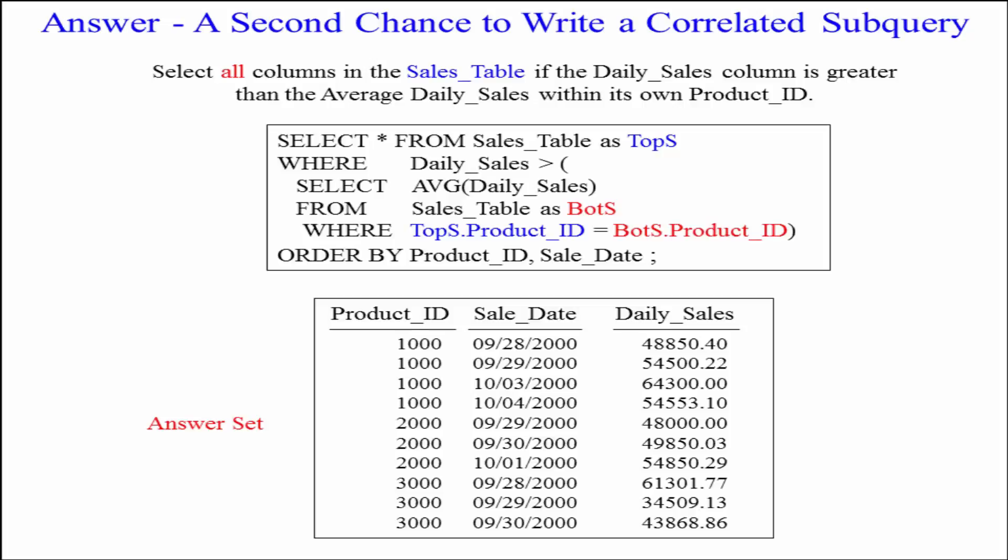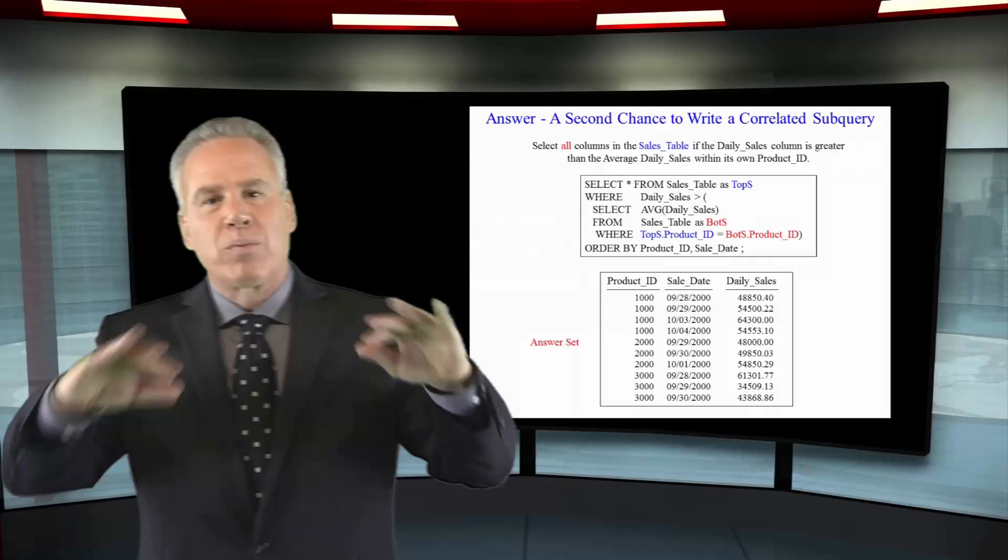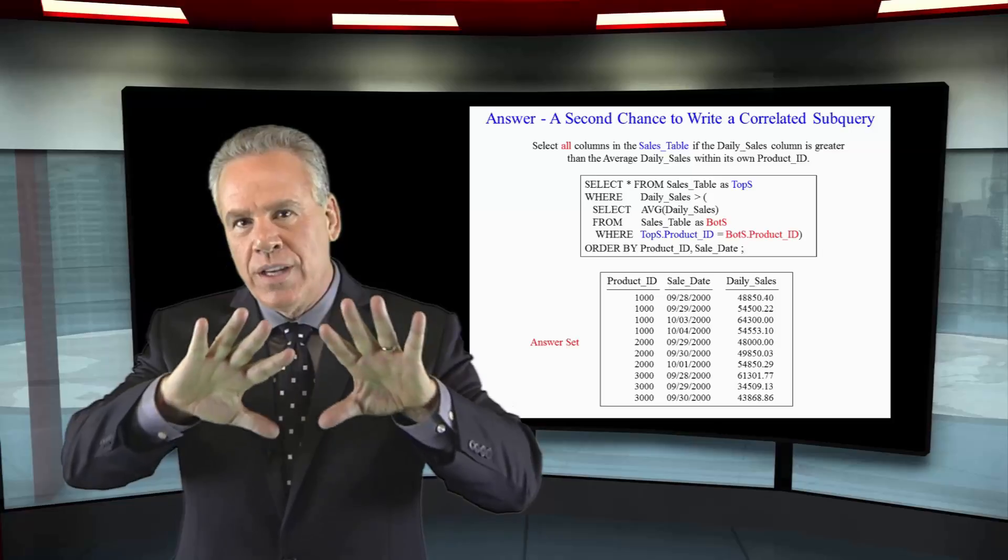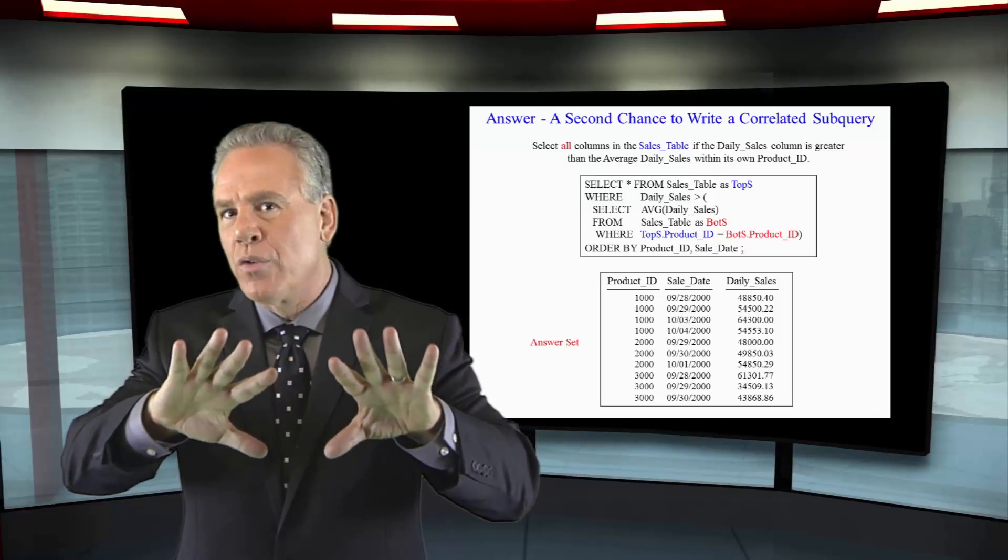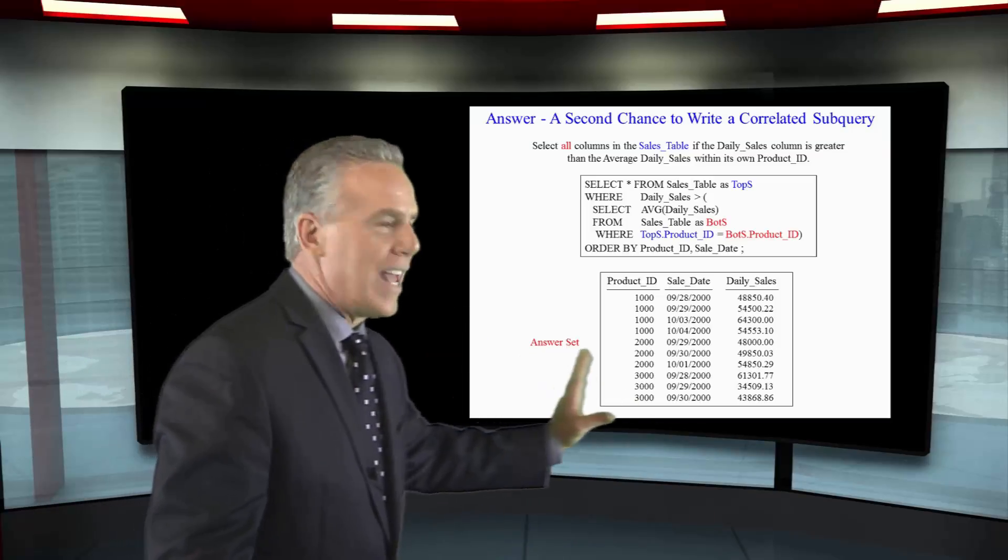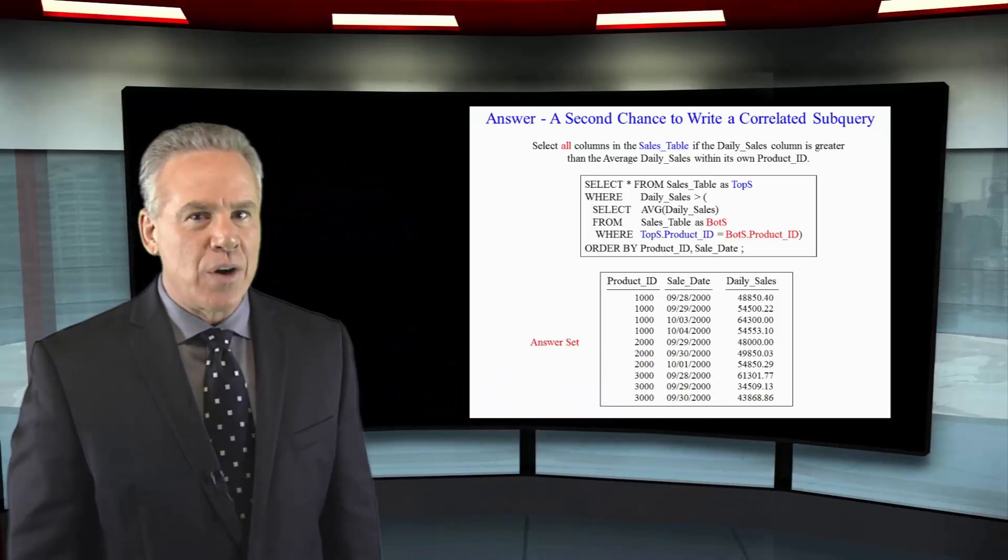We wanted to know who was making more than the average daily sales within its own product ID. So we're going to say SELECT everything FROM sales table AS I called it top s WHERE daily sales is greater than SELECT the average daily sales FROM sales table again, but I called this bottom s WHERE top s dot product ID equals bottom s dot product ID.